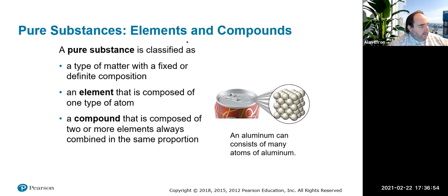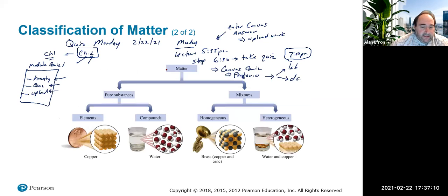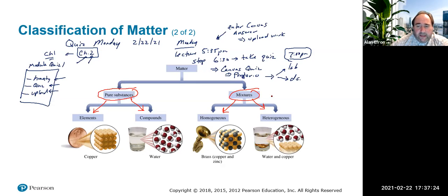Matter is basically anything that occupies space and has mass, which is pretty much everything. Matter can be broken up into several categories: pure substances, which can be elements or compounds, and mixtures, which can be homogeneous or heterogeneous. We're going to talk about all of those things in this chapter.